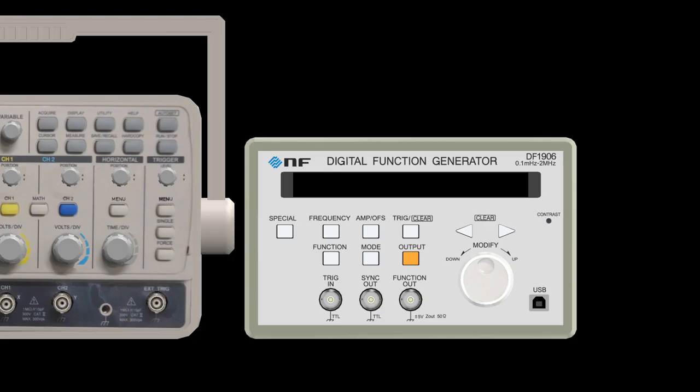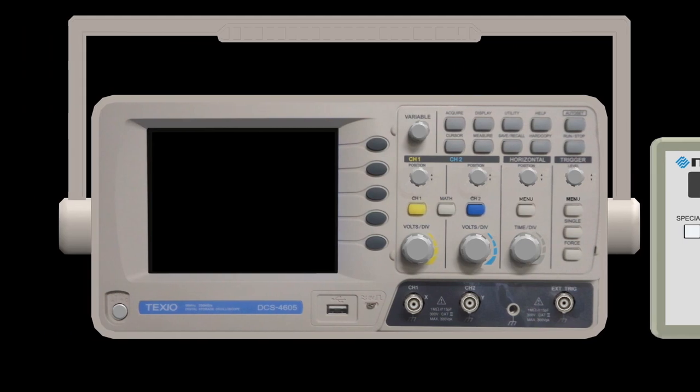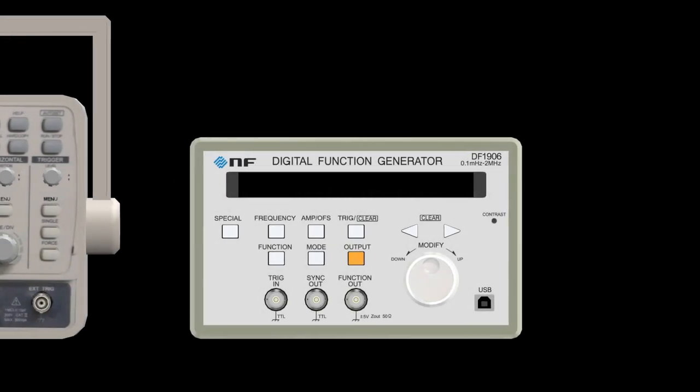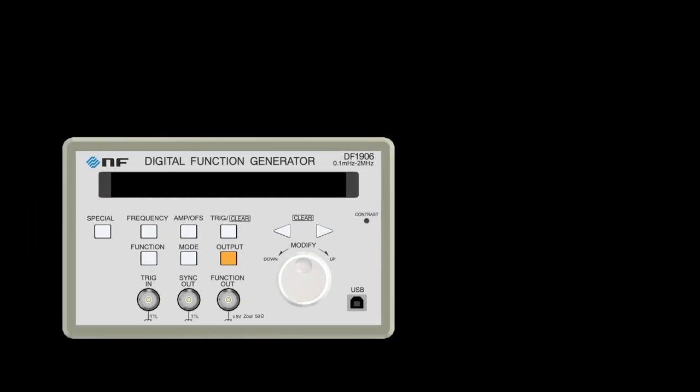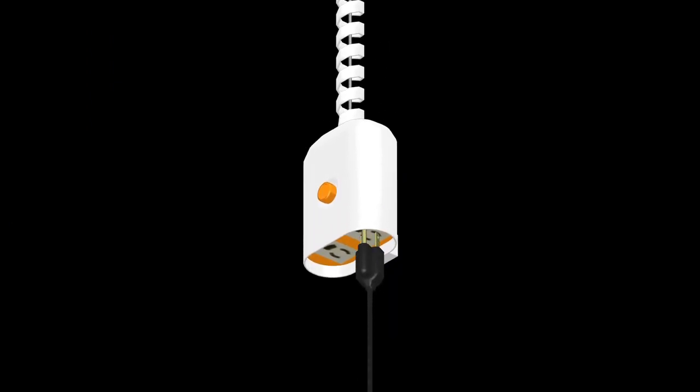This is the oscillator. And this is the oscilloscope. First, I will explain how to operate the oscillator. The oscillator is a device that produces AC electrical signals. It is powered by an outlet coming down from the ceiling.